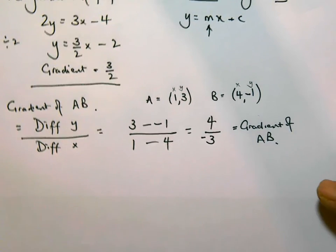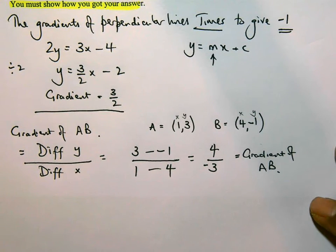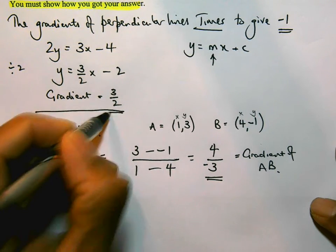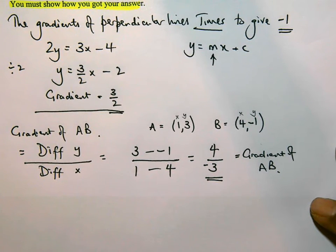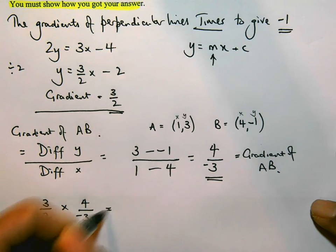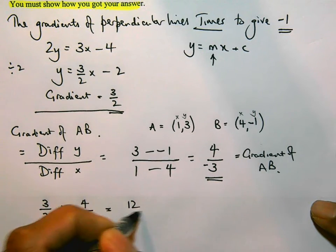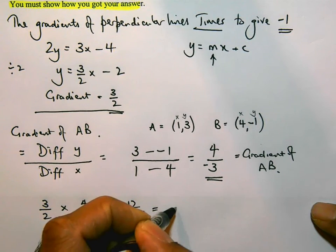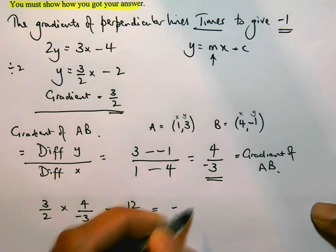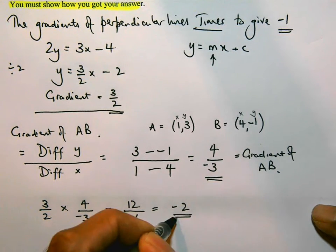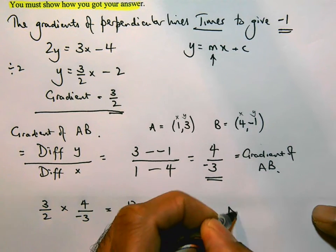And remember the fact that we said at the very beginning: the gradient of perpendicular lines times together to give you -1. So I've got the gradient of AB, I've got the gradient of the line. So let's just check: 3/2 times 4/-3. 3 times 4 is 12, over 2 times -3 is -6. And that works out to give you 12 divided by 6 is 2, and it's going to be -2. That's not -1.